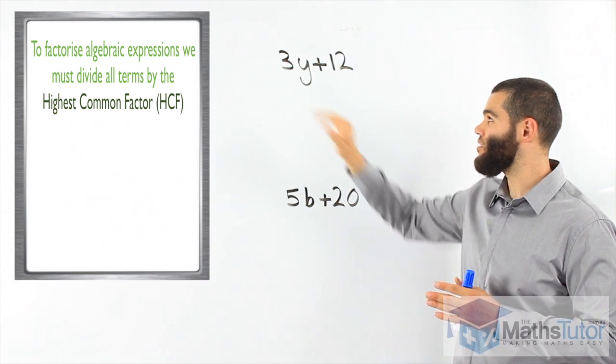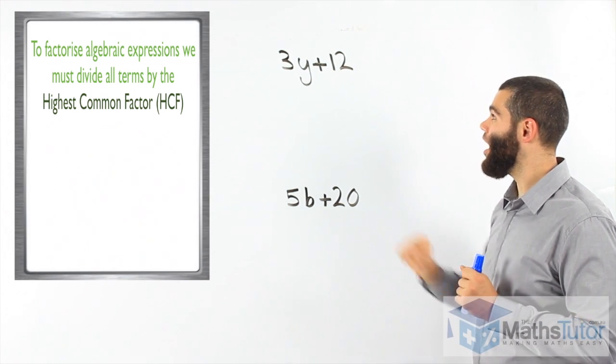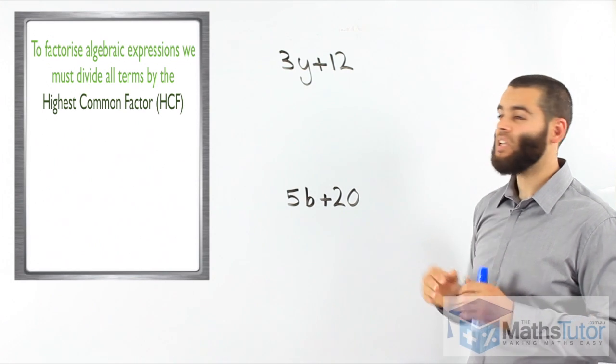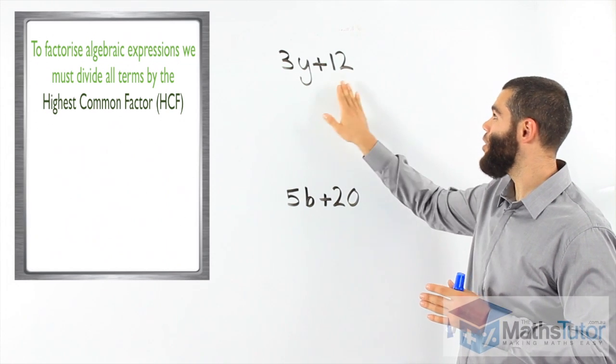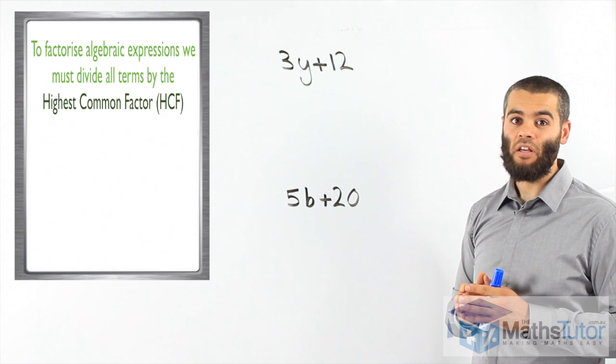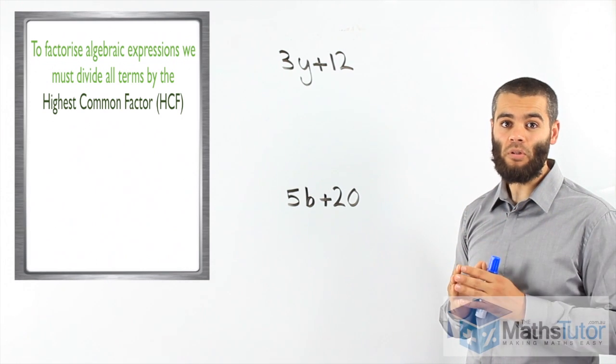So, the factors of 12, the factors of 3y, you need to know your times tables to realize that the highest common factor here is going to be 3. The highest common factor in 3y and in 12 is 3. Now, the highest common factor meaning, what number, or even sometimes pronumeral,